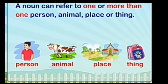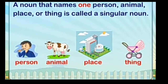A noun that names only one person, animal, place, or thing is called a singular noun. In this picture, the person is one, the animal is one, the place is one, and the thing — cheese — is also one. So it is called a singular noun.